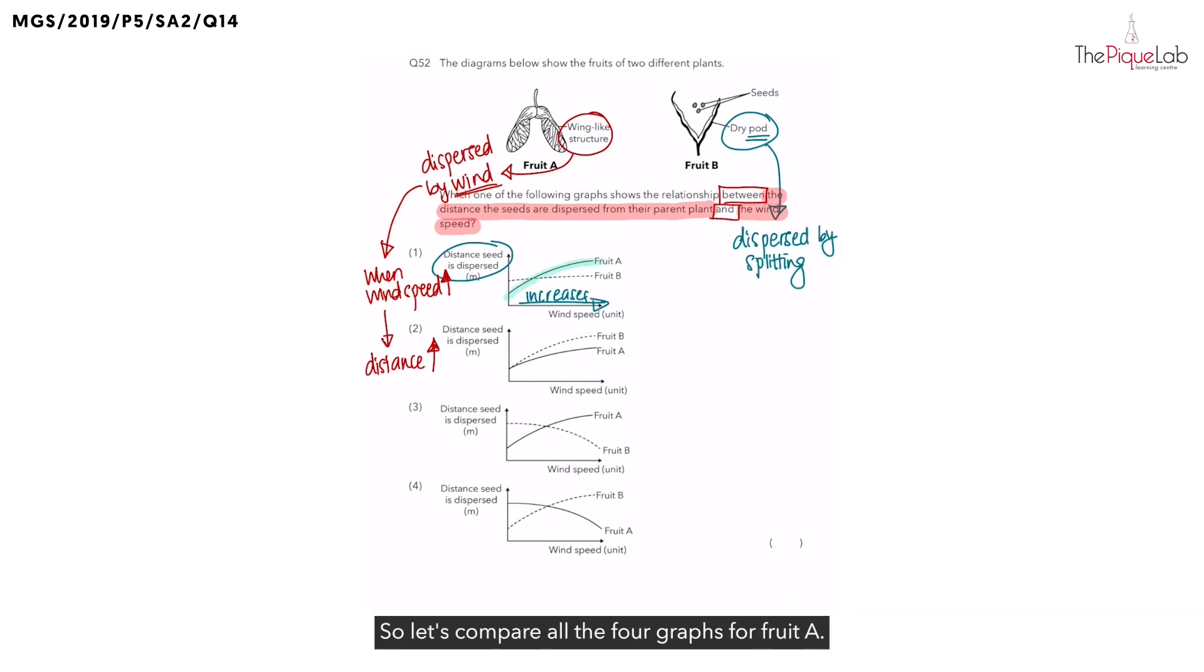So let's compare all the four graphs for fruit A. Remember, we are looking for the distance to be increasing. So which graph does not show that? Number one shows the distance the seed dispersed for fruit A increasing. Number two also shows an increasing trend. Number three also shows an increasing trend.